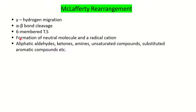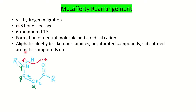After this process, it is going to form a neutral molecule and a radical cation. The radical cation will be our McLafferty ion. Molecules such as aliphatic aldehydes, ketones, amines, acids, esters, unsaturated compounds, and substituted aromatic compounds can undergo McLafferty rearrangement. It's not necessary that all these undergo it — the key condition is that the molecule should have gamma hydrogen. So let's see the first example.